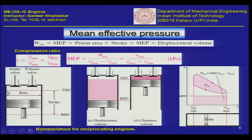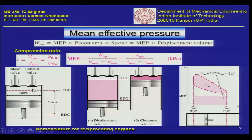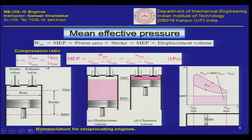The swept volume plus the clearance volume — the totality is called the total volume of the system. With this background we can define what is called the compression ratio of the engine. If we define it as R, then it is V maximum divided by V minimum — that means V at the BDC divided by V at the TDC, which is the volume of the combustion chamber at TDC. Naturally, as the clearance volume becomes smaller and smaller, the compression ratio keeps increasing.